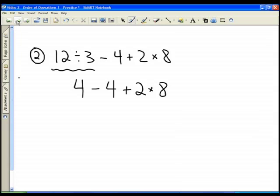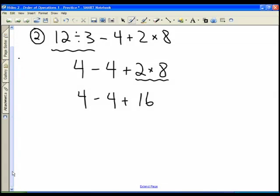In my second line, I'm left with this multiplication of 2 times 8. I'm going to rewrite my first parts that I'm not operating on, and now 2 times 8 is 16.